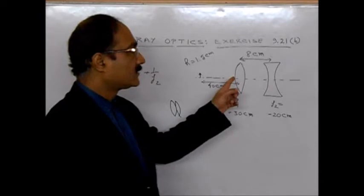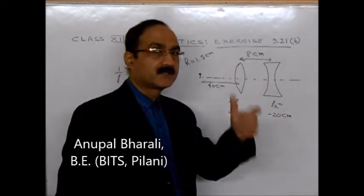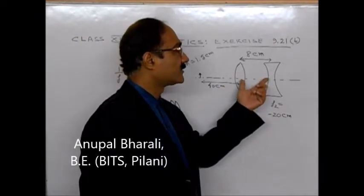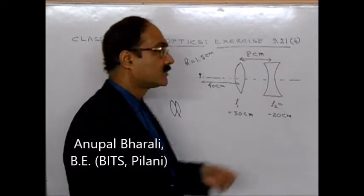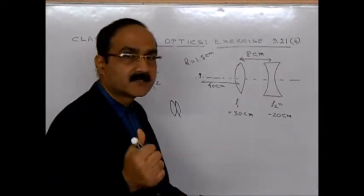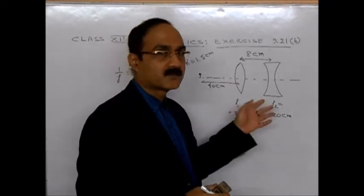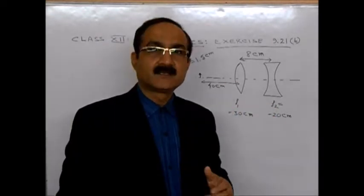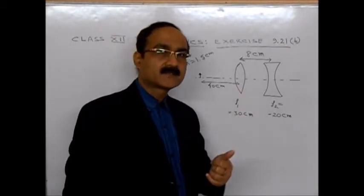Because this formula is for that situation when the two lenses are in contact. But here the two lenses are not in contact. There is a separation between them of 8 cm. So this equation cannot be used. This is the first thing to understand in this equation.